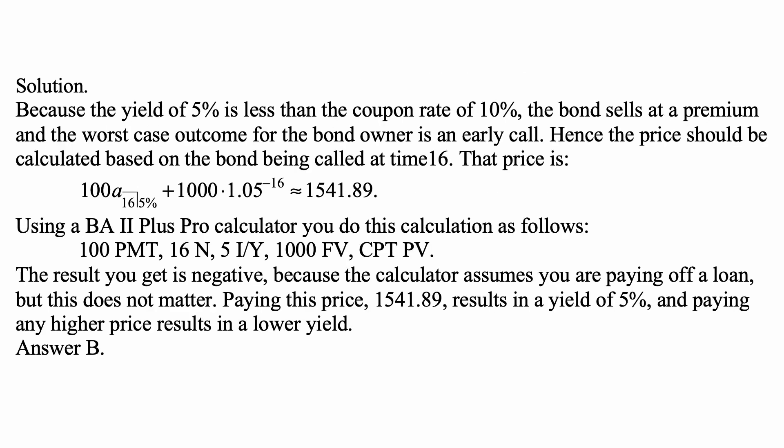And here is the solution. Because the yield of 5% — the current market yield — is less than the coupon rate of this bond, which is 10%, the bond sells at a premium. The worst outcome for the bond owner is an early call, because that means the holder of the bond is losing that high coupon and has to give up a good thing.